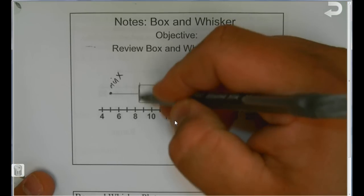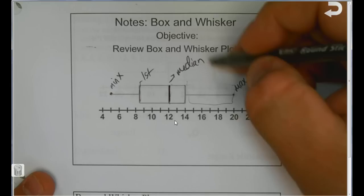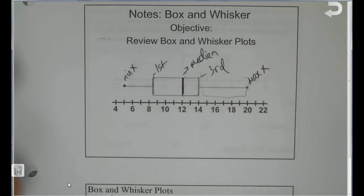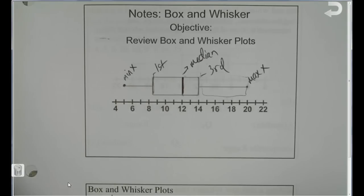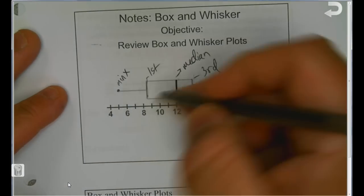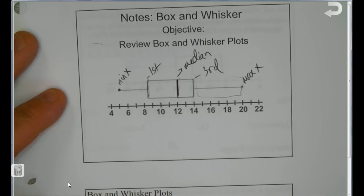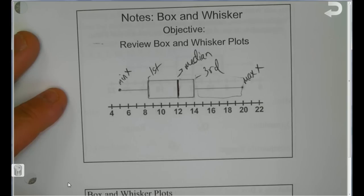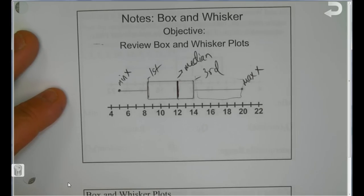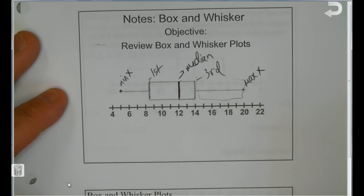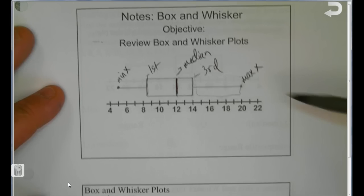Here we have the first quartile and here we have the third quartile. Q1 is the median of the lower half, and Q3 is the median of the upper half. The range is the maximum value minus the minimum value, and the interquartile range is Q3 minus Q1.